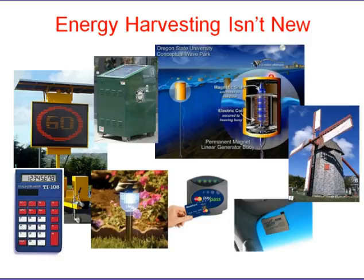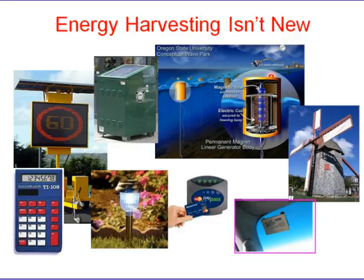Energy harvesting is nothing new — examples include solar-powered calculators, road signs, and decorative lamps that are popping up in gardens. Toll tag or pay-tag types use RFIDs, which actually run on harvested power by absorbing a pulse of energy from the reader, storing that energy, and using it to retransmit the identity back to the reader.